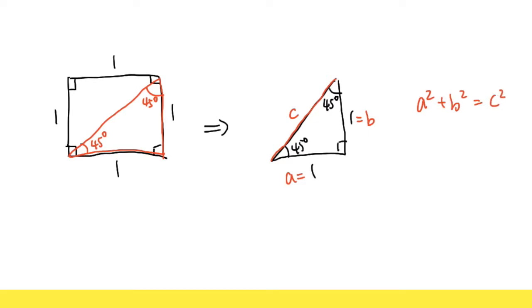and then we just have to do the work. We know A is 1, so we have 1 squared, plus B is also 1, so it's 1 squared again, and this has to be C squared. And we just have to work this out. 1 squared is 1 plus 1 squared is 1, and this is equal to C squared. And you see 1 plus 1 is 2. 2 is equal to C squared.